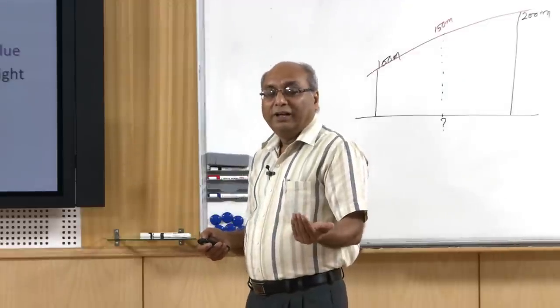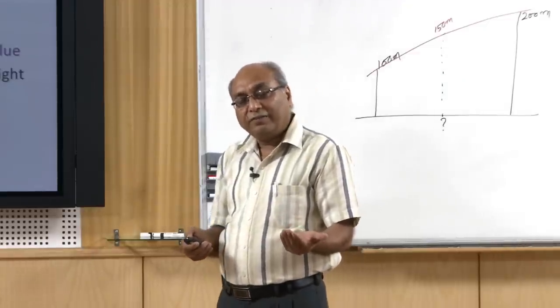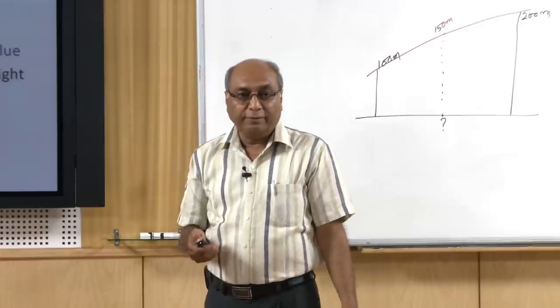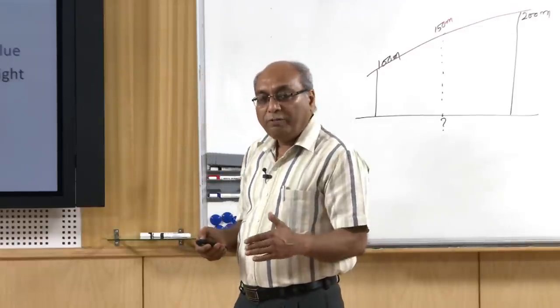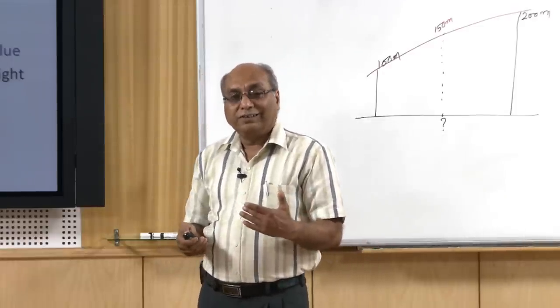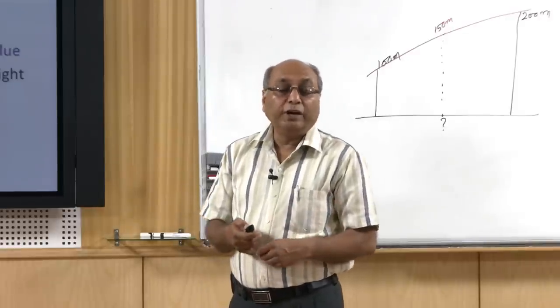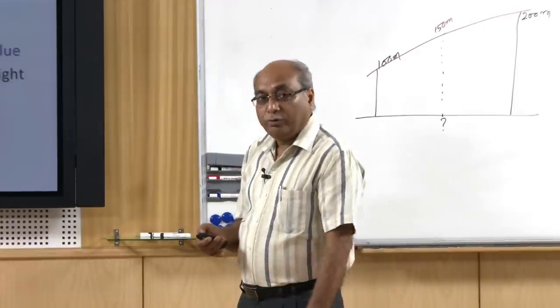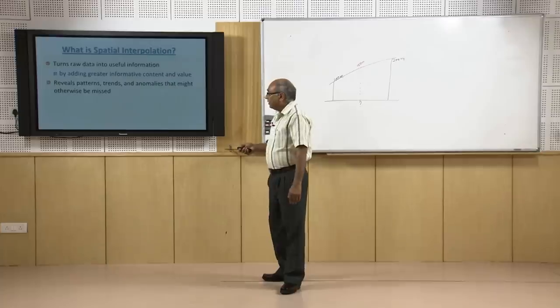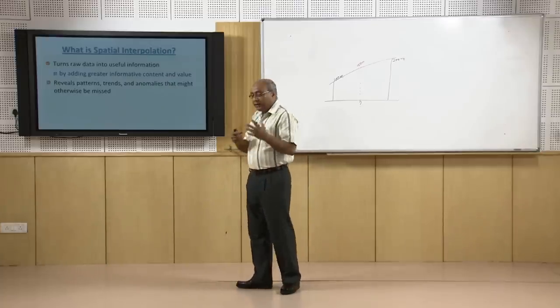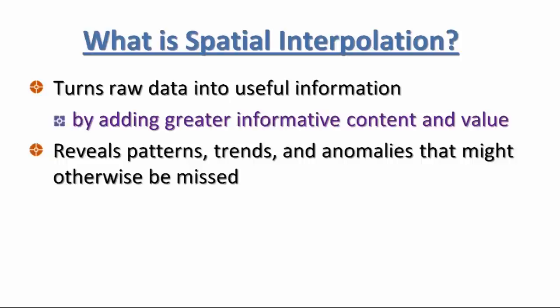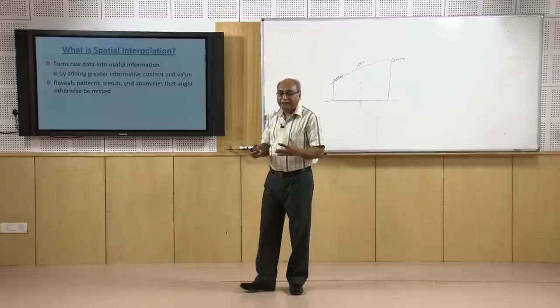The best example of terrain surfaces is digital elevation models, many of which have been derived from satellite data or through interpolations using contour data and point heights. Once discrete data is converted to a continuous surface, it can also reveal patterns, trends, and anomalies such as higher or lower locations.